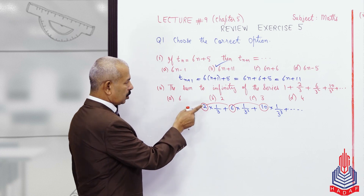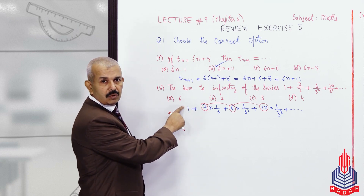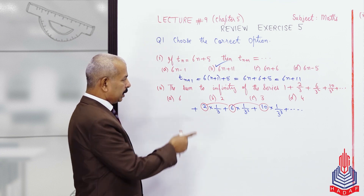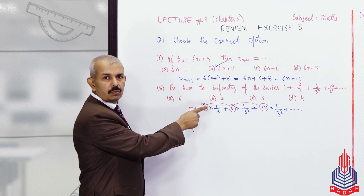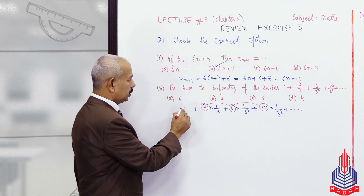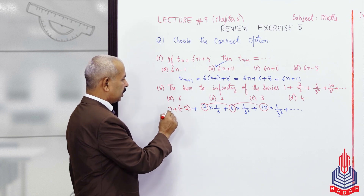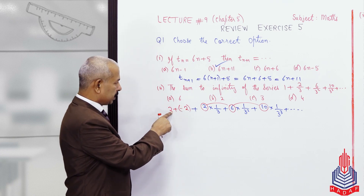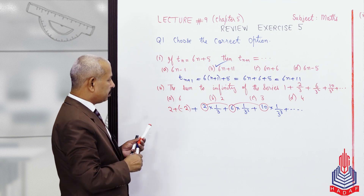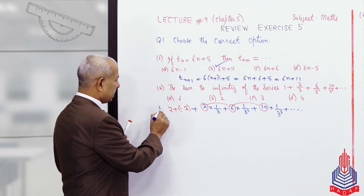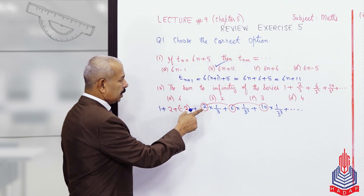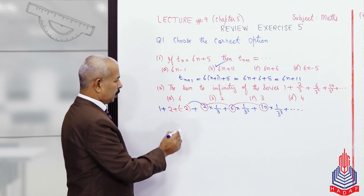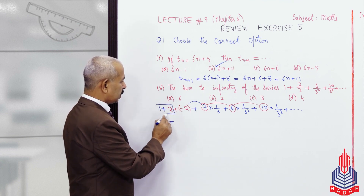A question arises: the difference between consecutive arithmetic terms should be 4, but the first term written is 1. So I adjust it — subtracting 4 from 2 gives minus 2. I write minus 2 plus 2 to compensate, since we added something of our own, so we add it back separately. This is a very important step.